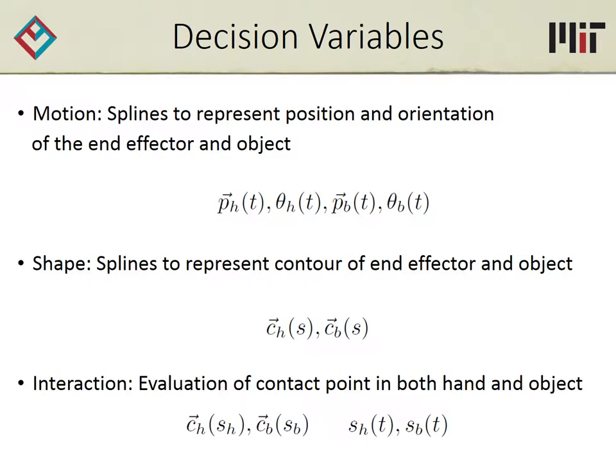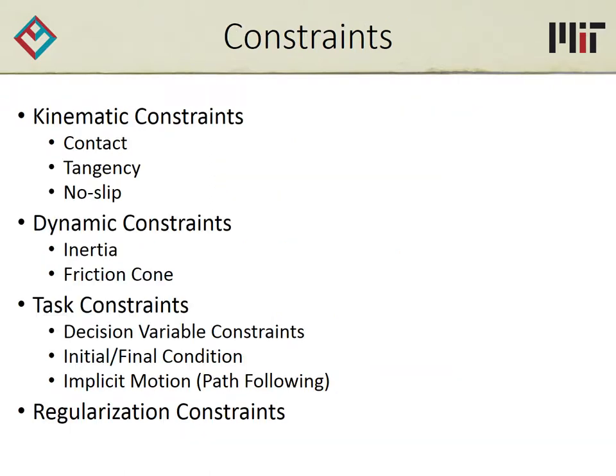The decision variables of our nonlinear program parameterize the shape and motion of the robot hand, as well as the contact interaction between the hand and the ball. The kinematics and dynamics are encoded as constraints in the program. The manipulation task is also encoded as a set of constraints — for example, initial and final conditions, or constraining the ball to move along a specific path. Sometimes we include an objective function, like throwing distance, to act as a performance metric.